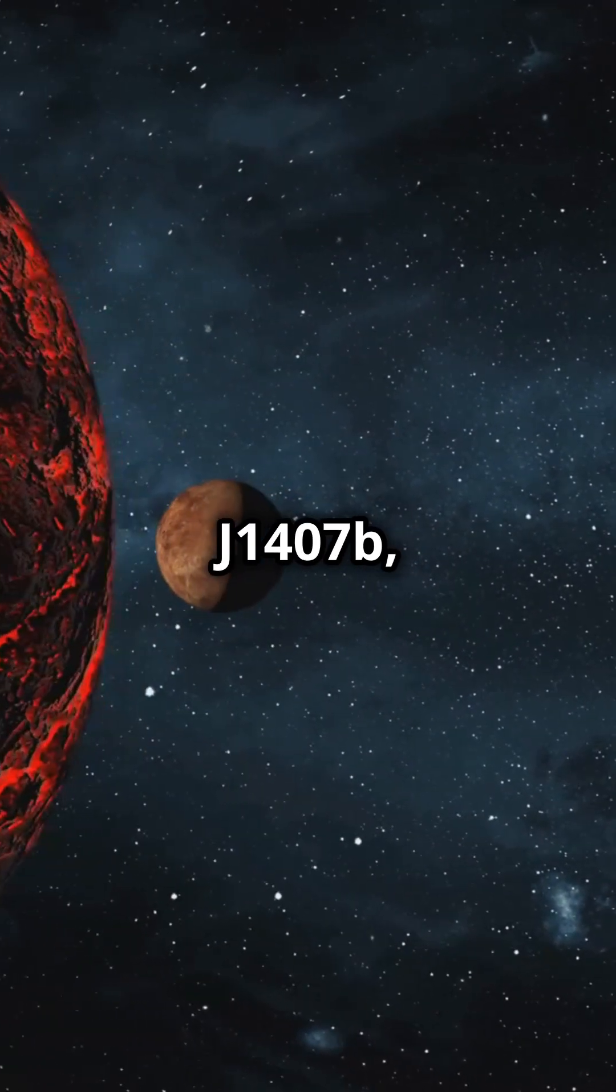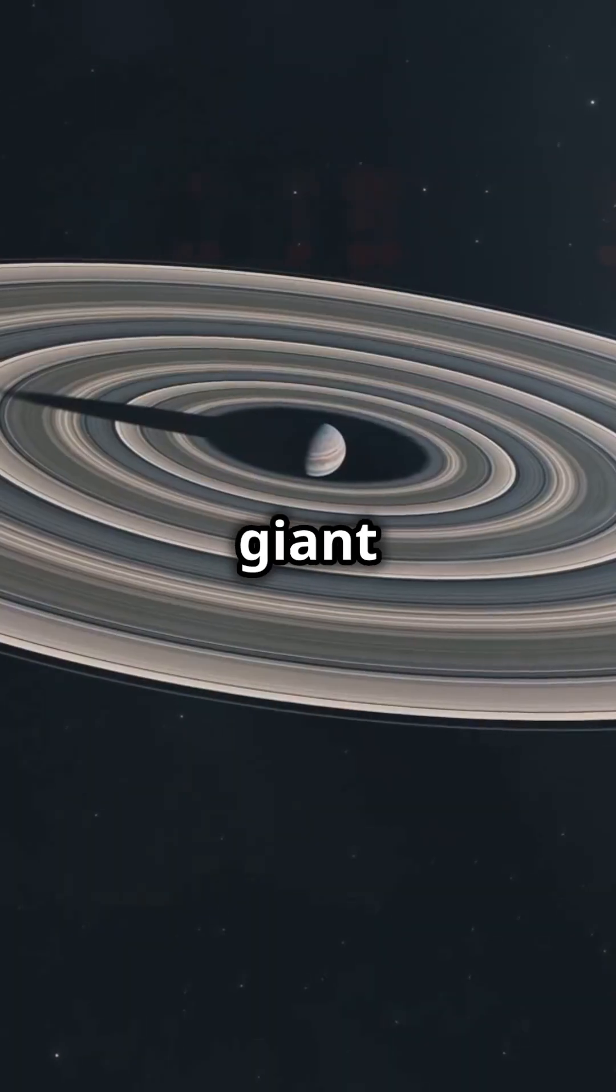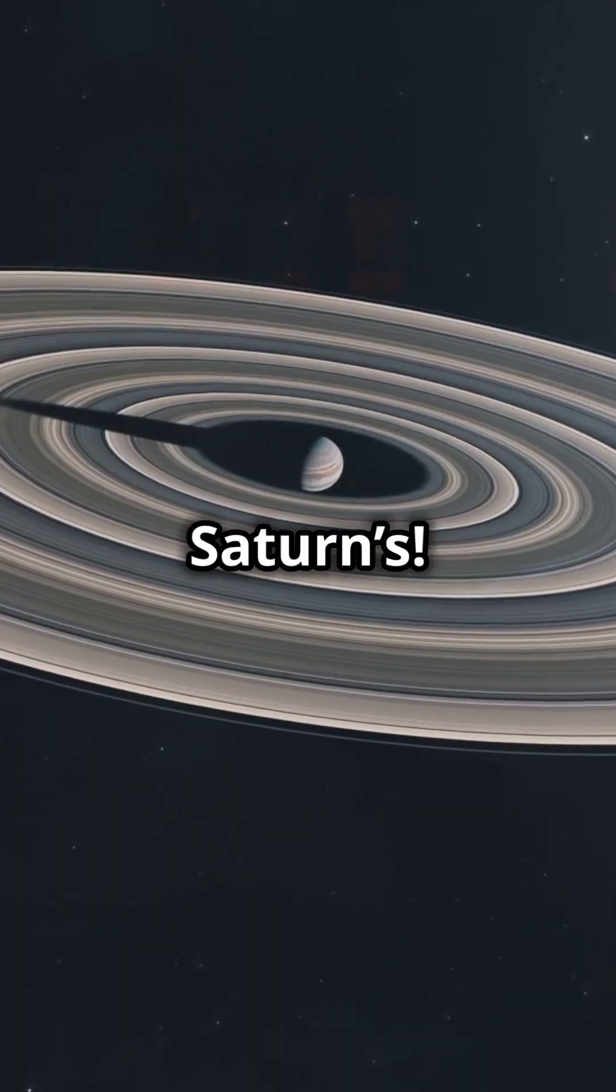Next we have J1407 b, also known as Super Saturn. Why? Because this gas giant has rings 200 times larger than Saturn's.